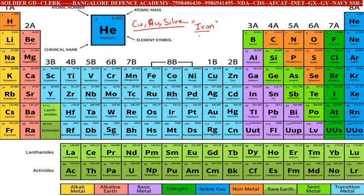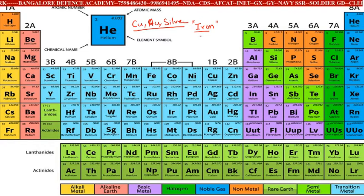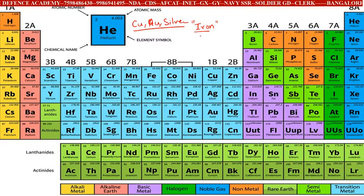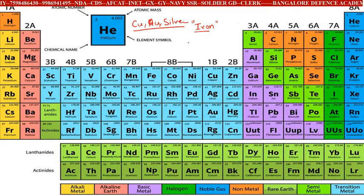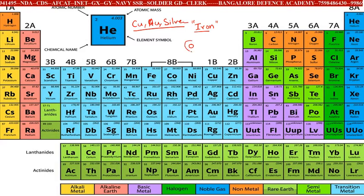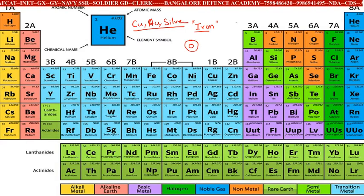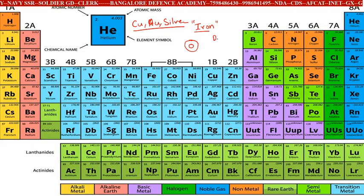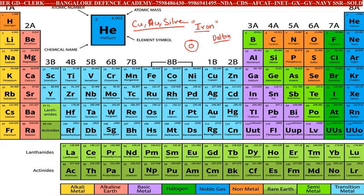Many scientists came up with ideas to arrange elements in a particular way. It could be done based on atomic number, atomic mass number, etc. Before that, let us try to understand: the atom is the smallest particle of an element. This theory was given by a person called Dalton.